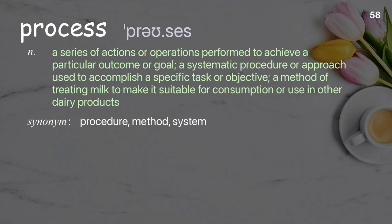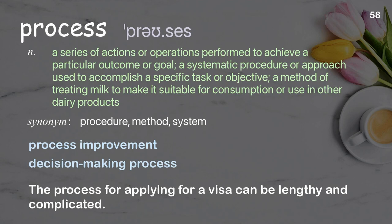Process: A series of actions or operations performed to achieve a particular outcome or goal; a systematic procedure or approach used to accomplish a specific task or objective; a method of treating milk to make it suitable for consumption or use in other dairy products. Examples: Process improvement, Decision-making process. The process for applying for a visa can be lengthy and complicated.